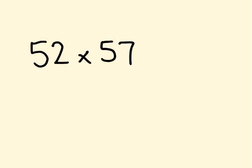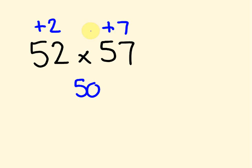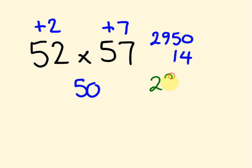Let's look at another example: 52 times 57. Using base 50, this is 2 more than 50 and this is 7 more than 50. We add them: 52 plus 7 is 59. Times by 100 gives 5,900. Halve that to get 2,950. Then multiply the offsets: 2 times 7 is 14. We add 14 on, giving the answer 2,964.